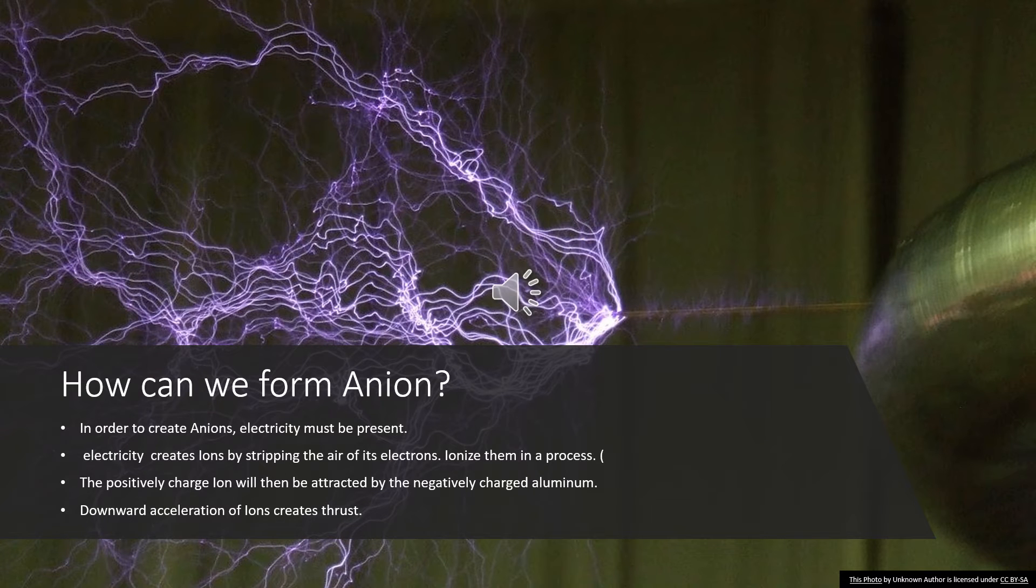Now to another important question. How can we form these ions? In order to create ions you need electricity to be present. Electricity usually creates ions by stripping air of electrons through what is called the ionization process. There's a lot of physics involved that I don't want to put in this project because it's just way too long and complicated. But that's usually how it works.